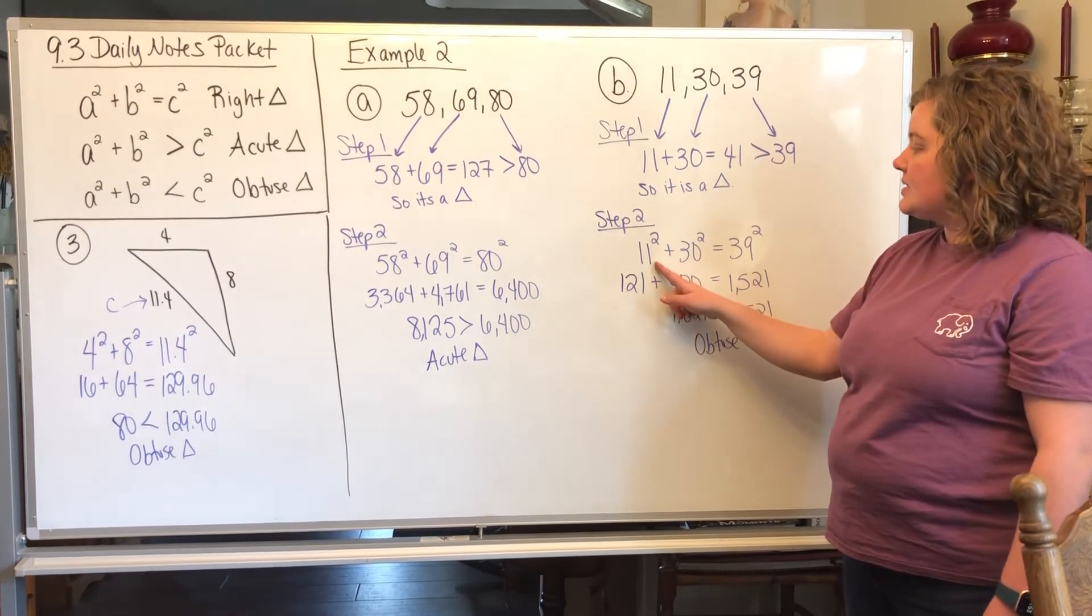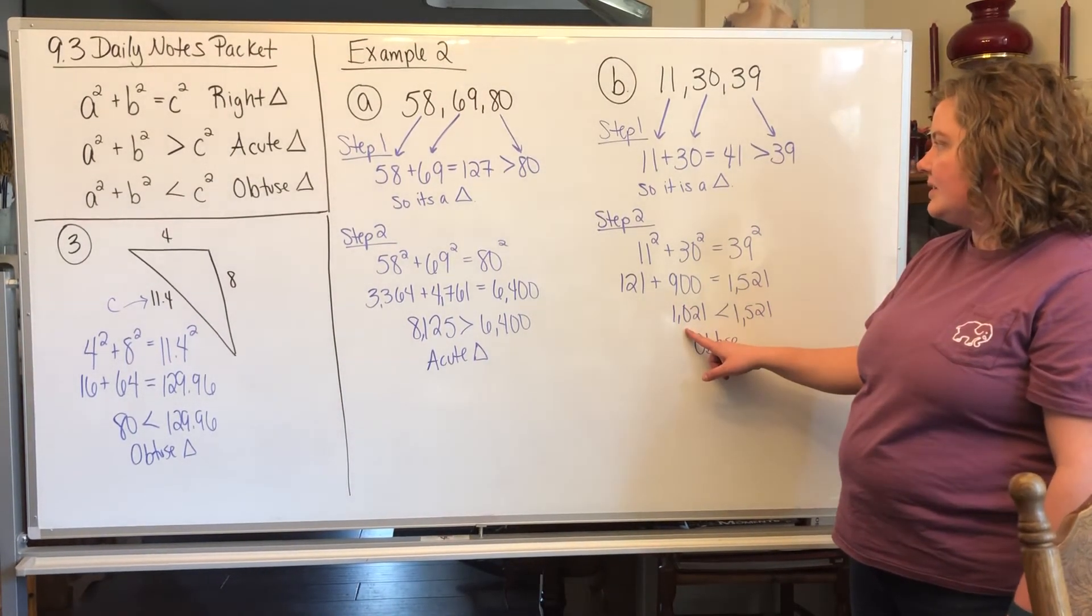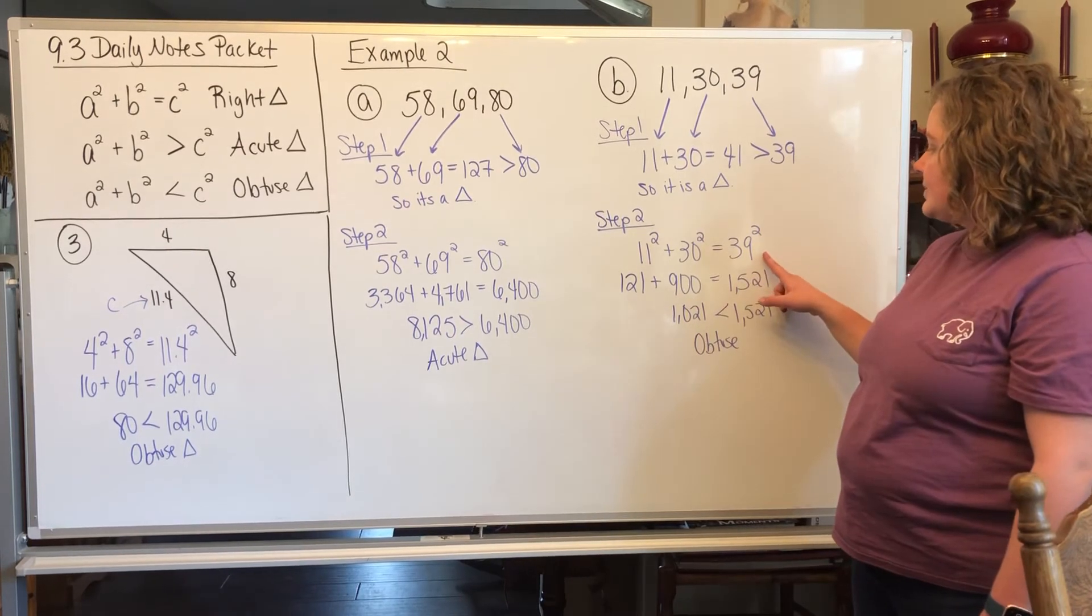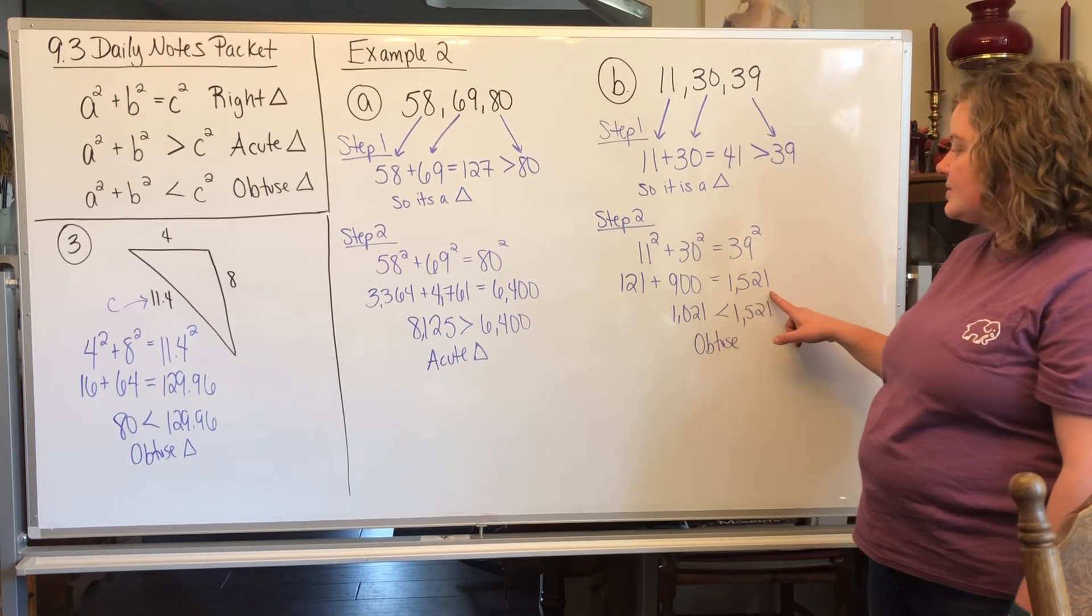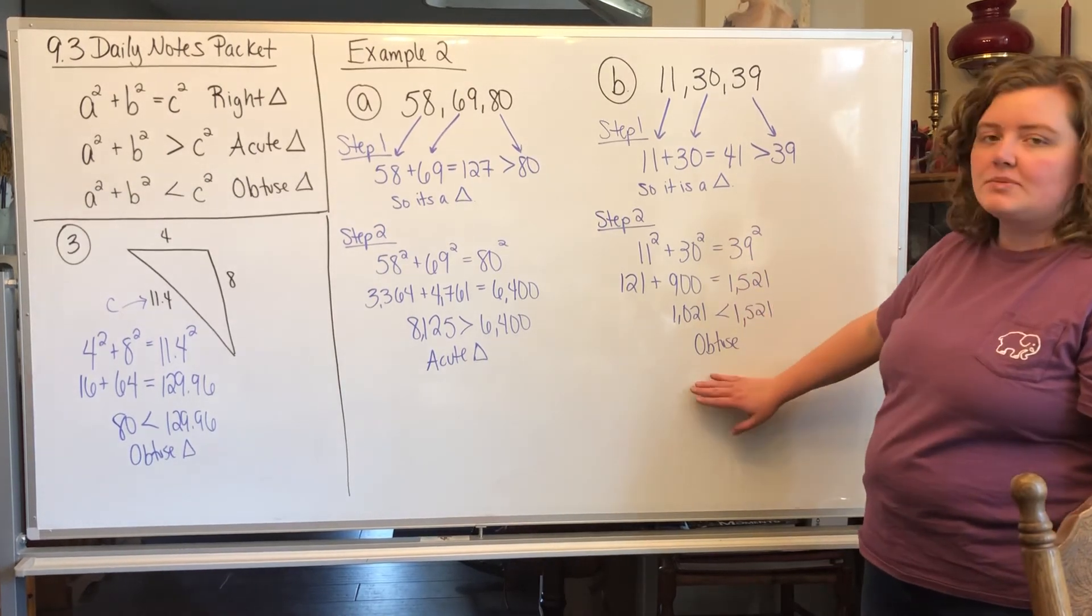So we're going to do 11 squared plus 30 squared. When we do that and add them together, you get 1,021. When you do 39 squared, you get 1,521. So since the C squared was bigger, it's going to be an obtuse triangle.